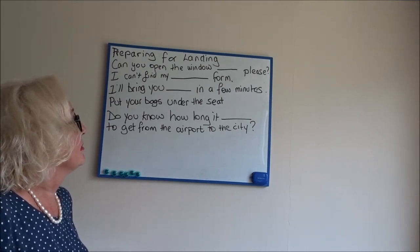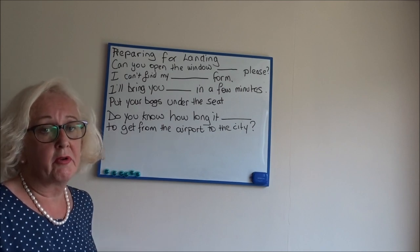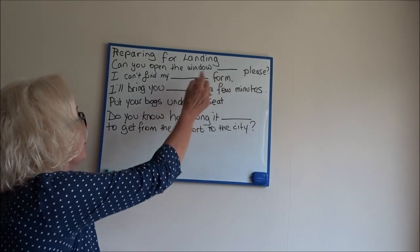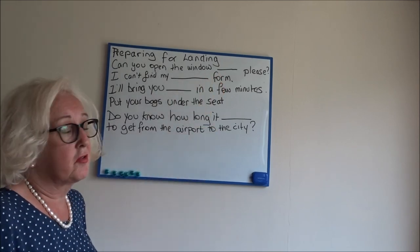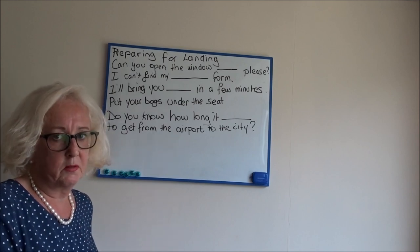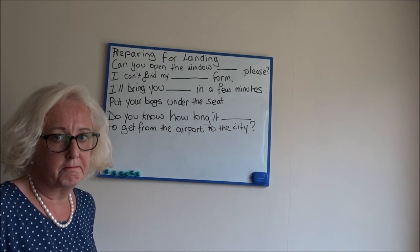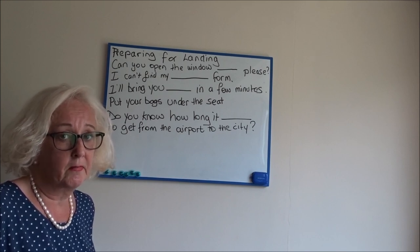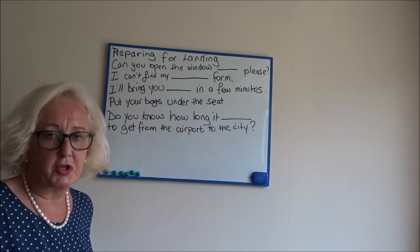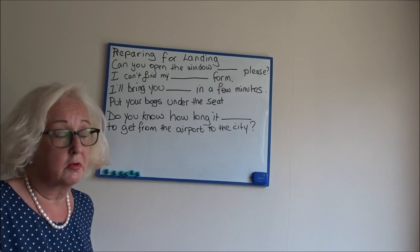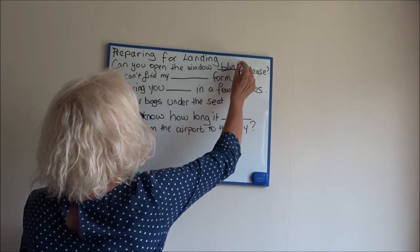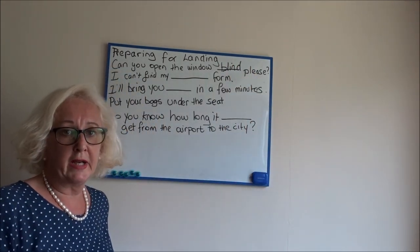I want to take a minute, or a few seconds anyway, for you to look at and see what you think the words should be in the blank. Let's look at the first one: 'Can you open the window something please?' What do you think goes in there? Think about when you go on a plane — what would the cabin crew person say to you? The answer is: blind. Can you open the window blind please?